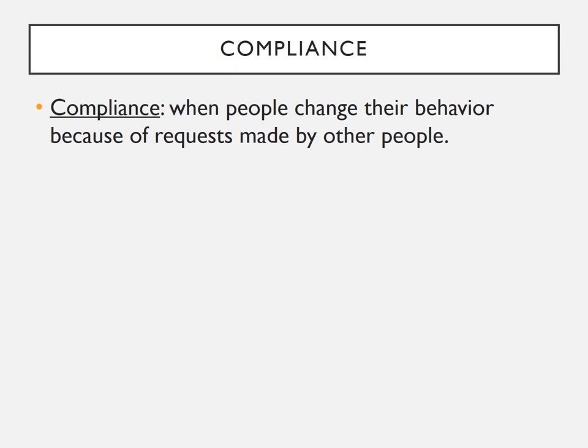Now let's move on to another form of social influence: compliance. Compliance is when people change their behavior because of requests made by other people. It is less about changing attitudes and more about getting people to do things because they have been asked to do so. This is a form of social influence because these requests from others make people act in ways they wouldn't otherwise — for example, if you asked me for a dollar to get something from the vending machine, I'd probably give you one because you asked, even though I wouldn't just walk up and give you a dollar otherwise.